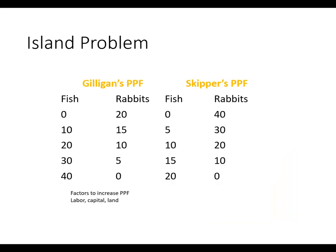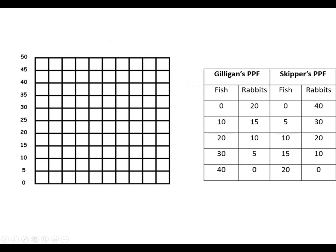Here's a problem to work through that illustrates a lot of this. We've got two people on a desert island: Gilligan and the Skipper. Gilligan can do these combinations here, and the Skipper can do these combinations here. For example, if the Skipper chooses this production point, they're choosing not to fish but to catch 40 rabbits, and then all the combinations in between. If they just catch fish, they can do 20 fish and zero rabbits.